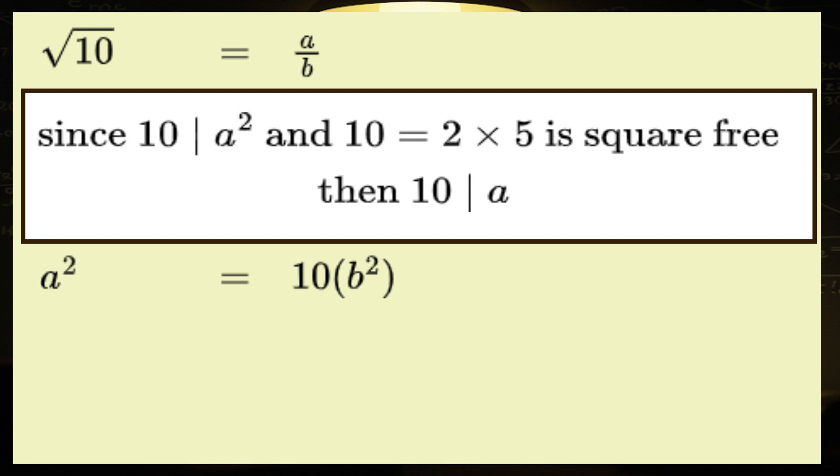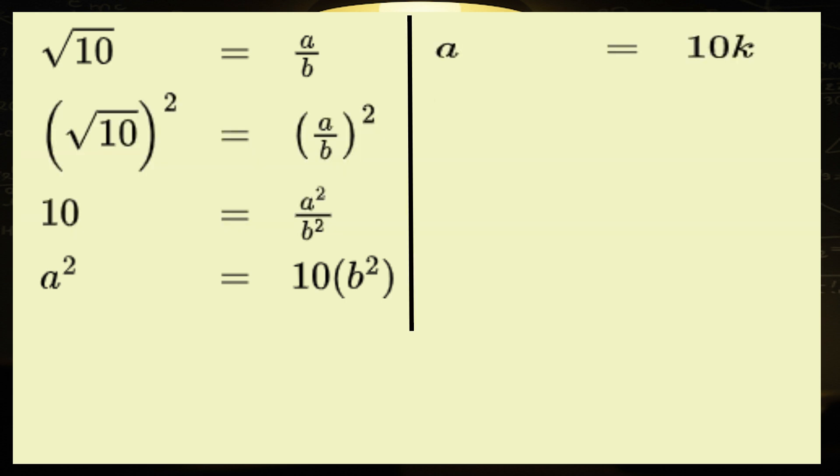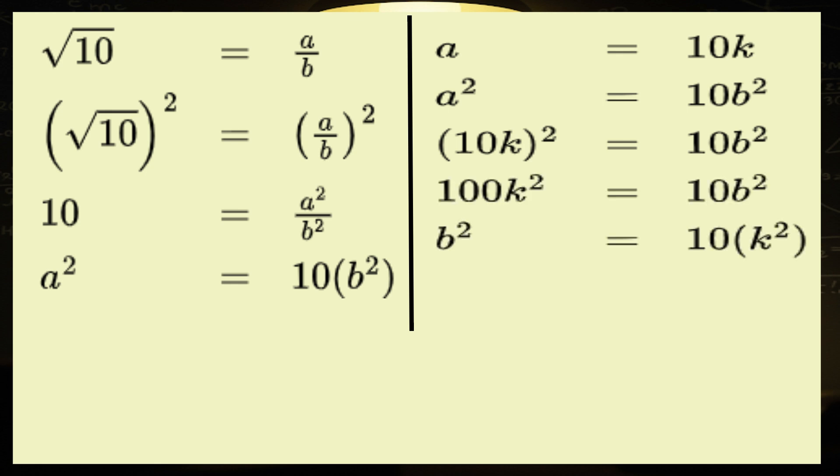In other words, if a squared is divisible by 10, then a must also be divisible by 10. Cue dramatic music. There exists an integer k such that a equals 10k. Now, let's plug that back into our original equation, a squared equals 10b squared. And now folks, hold on to your seatbelts, because here comes the simplification train. We get 100k squared equals 10b squared. Let's divide both sides by 10 to keep things spicy. That leaves us with 10k squared equals b squared.